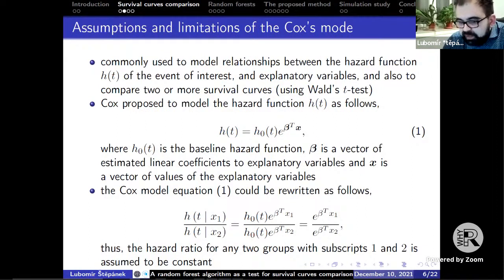Also, the initial total number of individuals and the number of all event times should be large enough such that the chi-square statistic should fulfill its asymptotic properties. The Cox proportional hazard model is commonly used to model the relationship between the hazard function of the event of interest and some other explanatory variables.